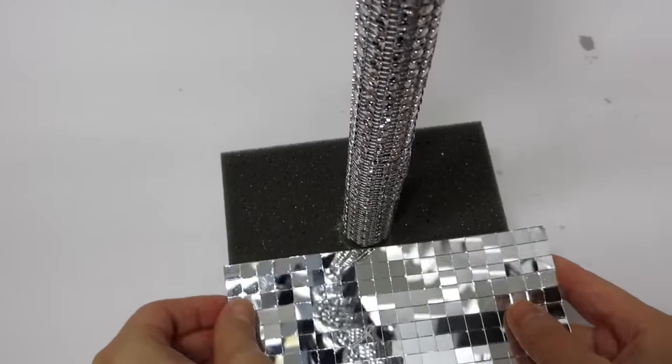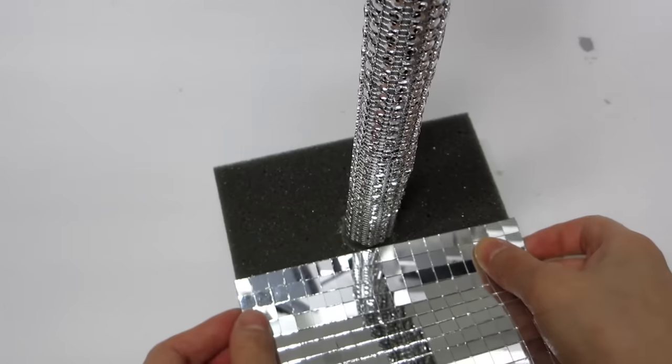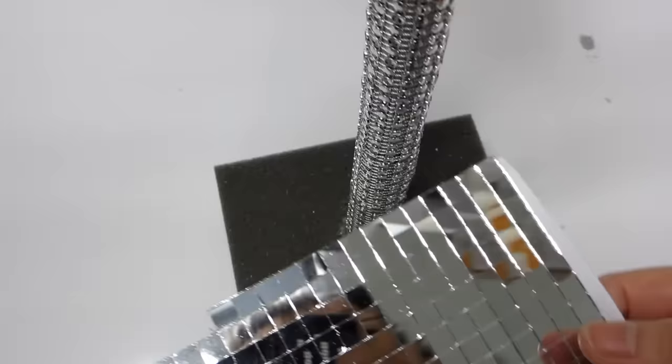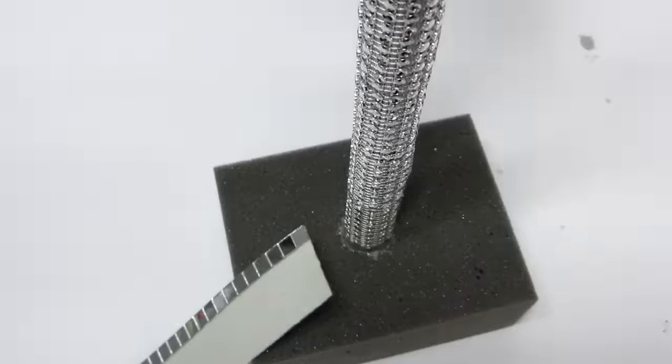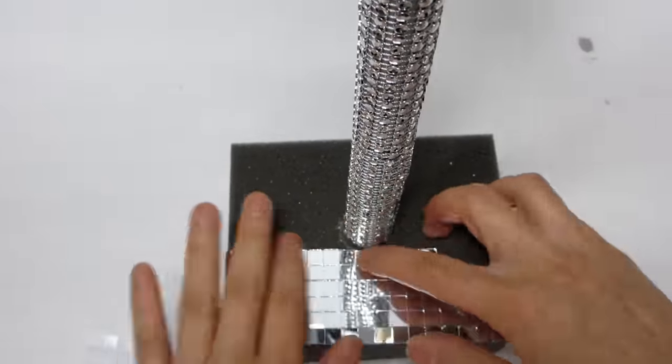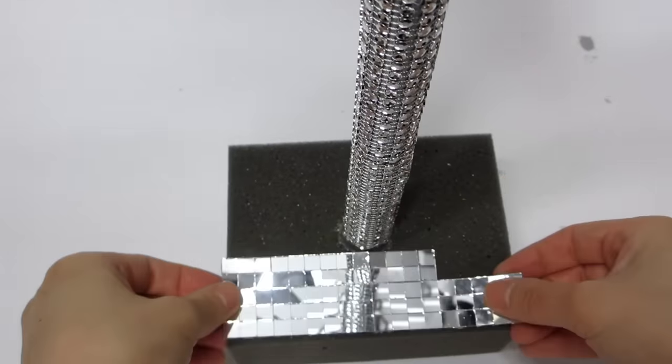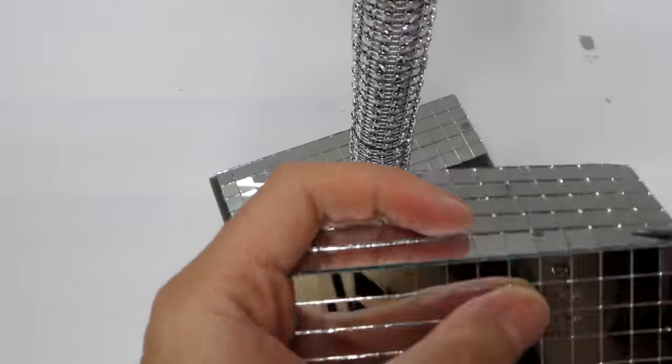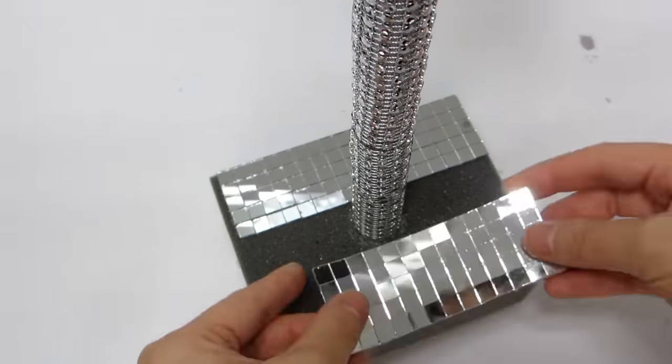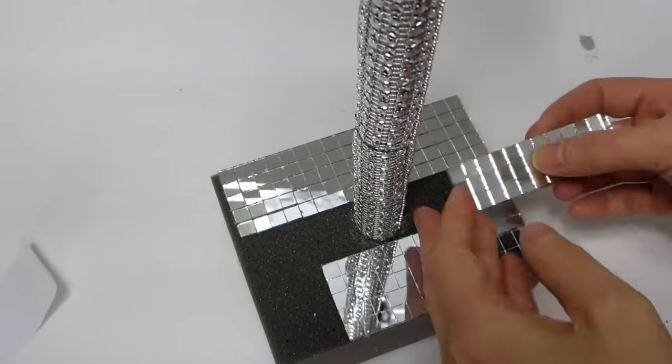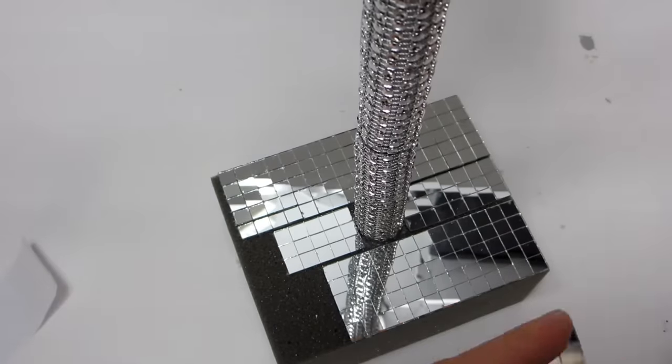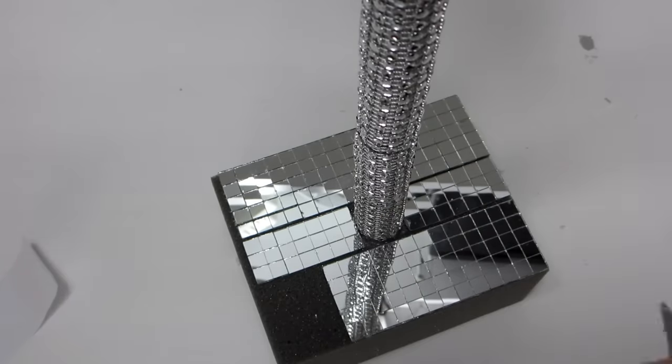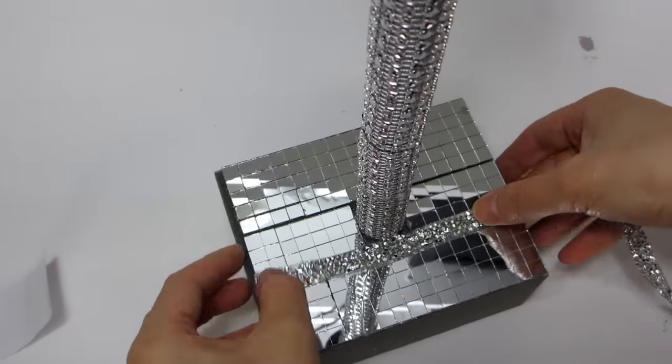To dress up the base, I'm going to cover the foam piece with some mini mirror tiles. Once I know how much I'll need, then I can place them onto the foam piece. These mini mirror tiles are self-adhesive, so no additional glue will be required. Use some rhinestone ribbon to cover any gaps.